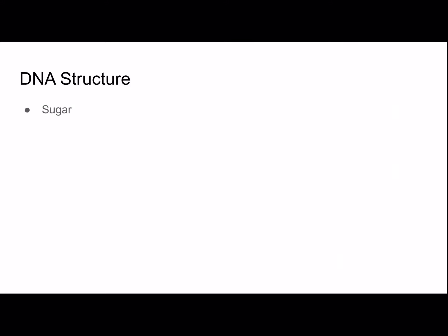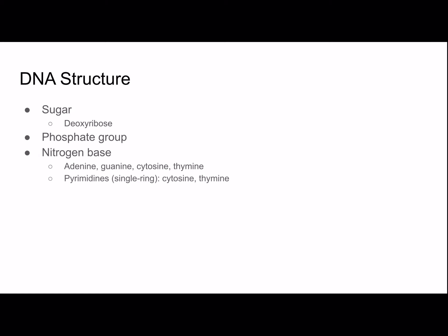DNA is made of a sugar — deoxyribose — a phosphate group, and a nitrogen base, which could be adenine, guanine, cytosine, or thymine. Pyrimidines are single-ringed nitrogen bases: cytosine and thymine. They're easy to remember because pyrimidines has a Y in it, and so do cytosine and thymine. Purines are the double-ringed molecules: adenine and guanine. A binds with T, and C binds with G — this is known thanks to the work of Erwin Chargaff, which is why these are called Chargaff's rules.